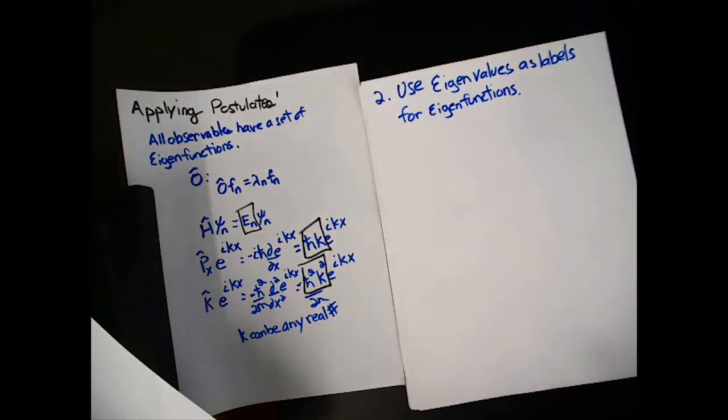We're going to use numbers related to eigenvalues as labels for the eigenfunctions. So, let's think about this. For a particle in the box Hamiltonian, we say h acting on psi sub n is equal to h bar squared pi squared n squared over 2m a squared times psi sub n. We use that n, that integer, to label which eigenvalue and which eigenfunction we're talking about.